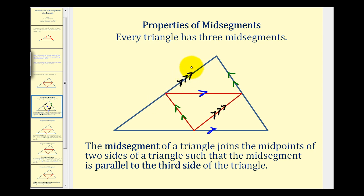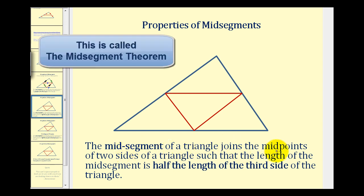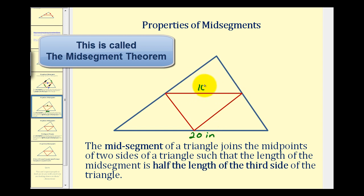Next, the mid-segment of a triangle joins the midpoints of two sides of a triangle, such that the length of the mid-segment is half the length of the third side of the triangle. So for example, if the length of this side of the triangle was 20 inches, the length of the parallel mid-segment would be 10 inches.